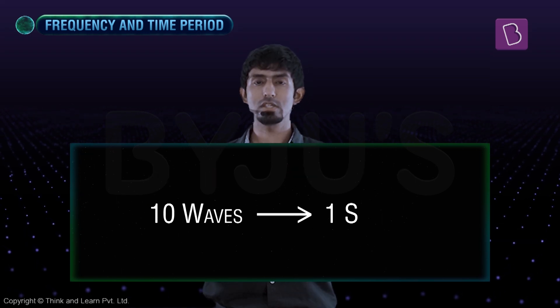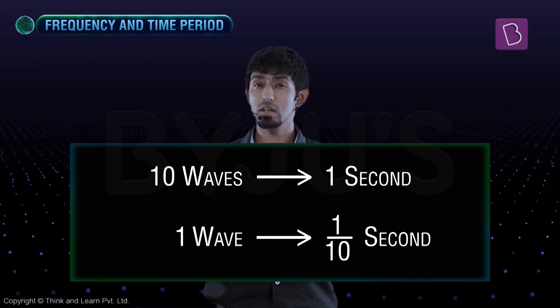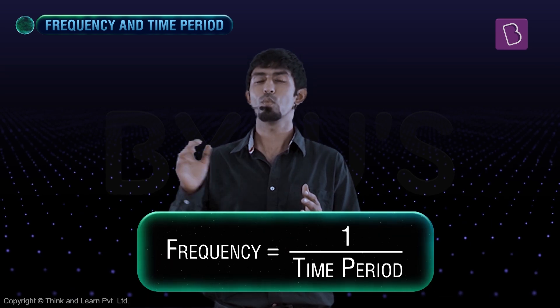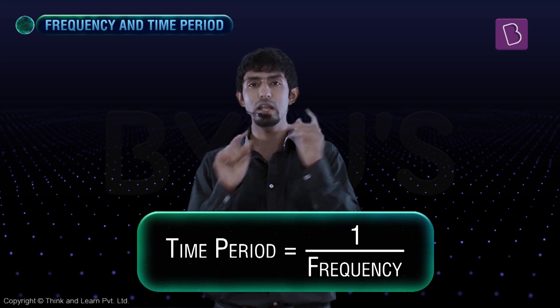If 10 waves take one second, then the frequency is 10. Then how much would the time period be? One by 10. Do you see the pattern already? Frequency is going to be one by the time period, or time period is going to be one by the frequency. So they're related as inverses, and it's very logical as to why that is true.